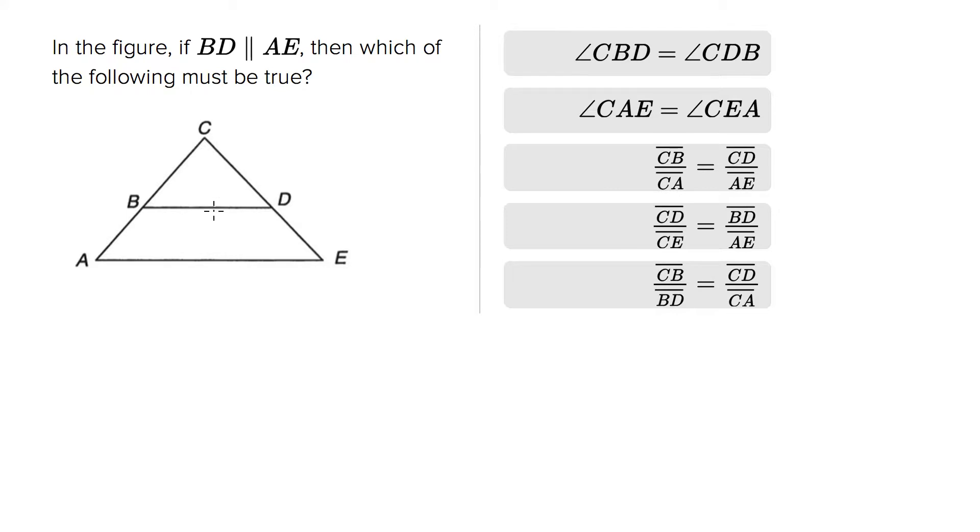They're telling us that these two lines here are parallel, which means that these two triangles, the smaller one and the bigger outer one, those are similar triangles.